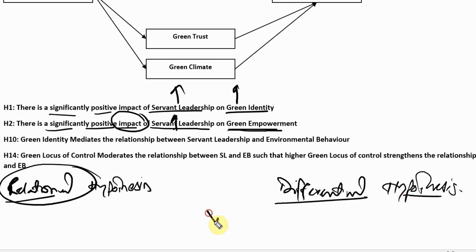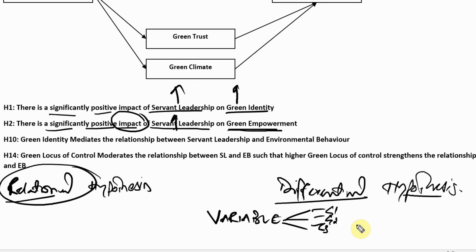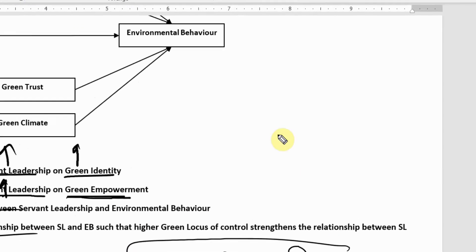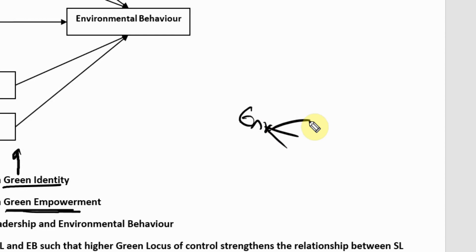A differential hypothesis is when you are assessing differences in a variable across groups — for example, group 1, group 2, group 3. Let's say I am assessing whether environmental behavior differs between males and females — that is a differential hypothesis. It could also involve three groups, such as environmental behavior across different job ranks: junior, middle, and senior level employees.